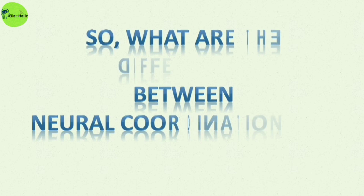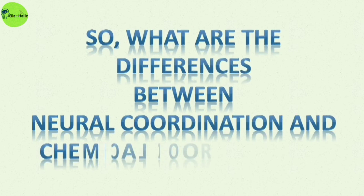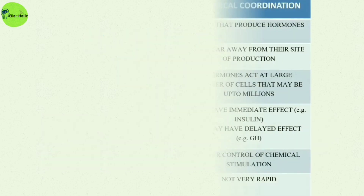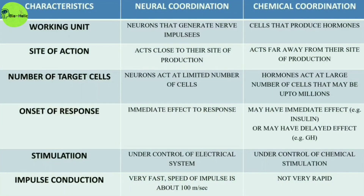Now, let's look at the differences between neural coordination and chemical coordination. Depending upon the working unit, they can be differentiated: in neural coordination, the working unit is neurons that generate nerve impulses, but in chemical coordination, the cells that produce hormones act as the working unit. Neural coordination acts close to its site of production, but chemical coordination generally acts far away from its site of production.